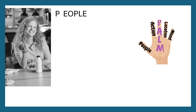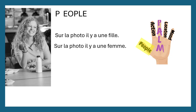Firstly, how could we describe the people? So this is a photograph that has been used previously for a photocard — I've cropped it because I just wanted us to focus on describing one person. How could we describe this girl? We could say 'sur la photo il y a une fille' — on the photo there is a girl. Or 'sur la photo il y a une femme' — notice we pronounce it 'femme', not 'femme' — it doesn't really match the sound spelling rules, but on the photo there is a woman.